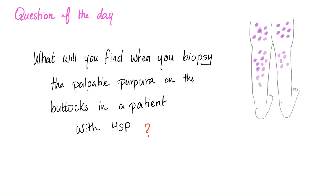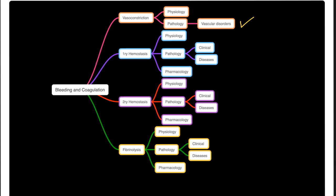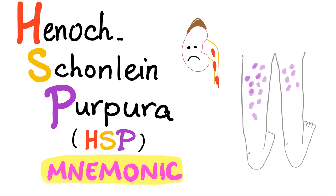Question of the day: what will you find when you biopsy the palpable purpura on the buttocks in a patient with Henoch-Schönlein Purpura? Let me know the answer in the comment section — you'll find the answer in the next video. And we are done with vascular disorders. Speaking of the next video, it's going to be a great mnemonic about Henoch-Schönlein Purpura.